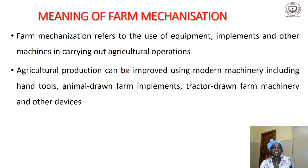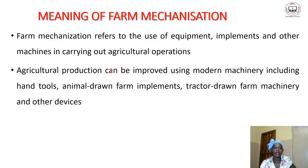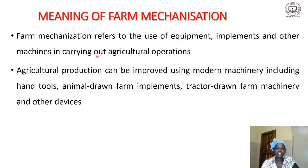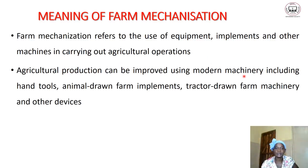Let us start with the definition of the term farm mechanization. Farm mechanization refers to the use of equipment, improvements, and other machines in carrying out agricultural operations. In order for agricultural production to be improved, we need to use these machines.